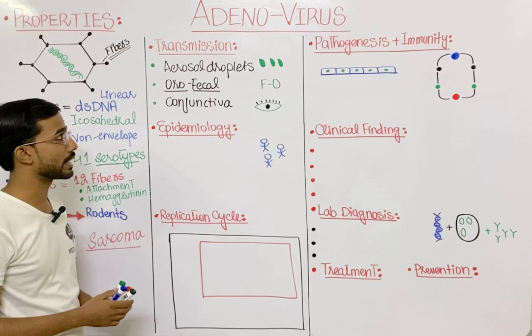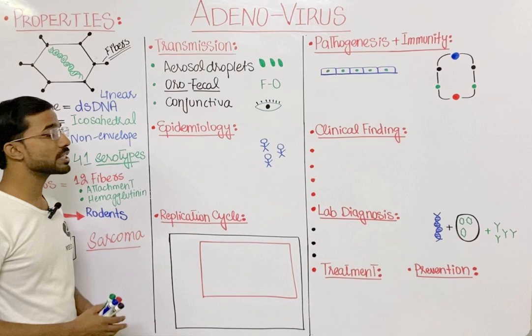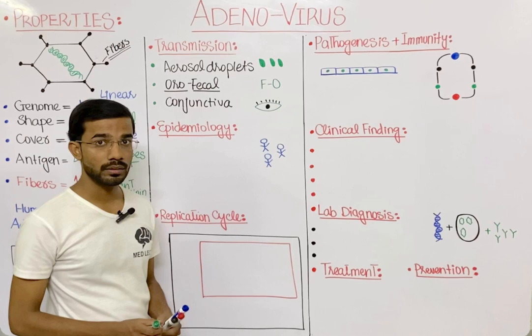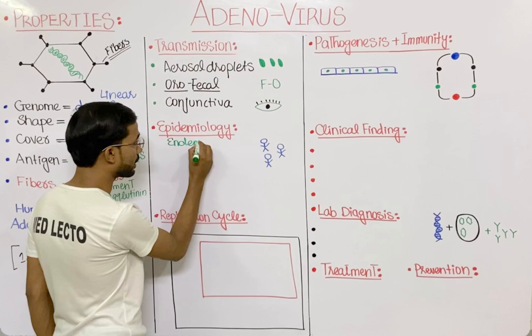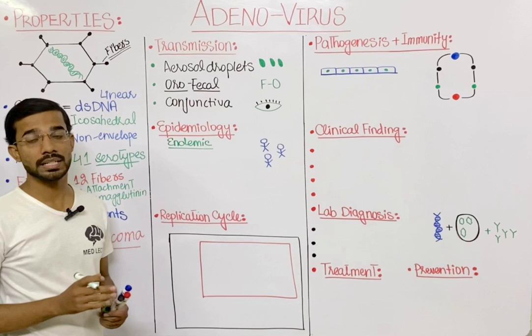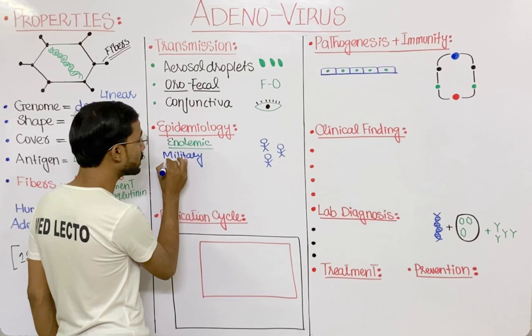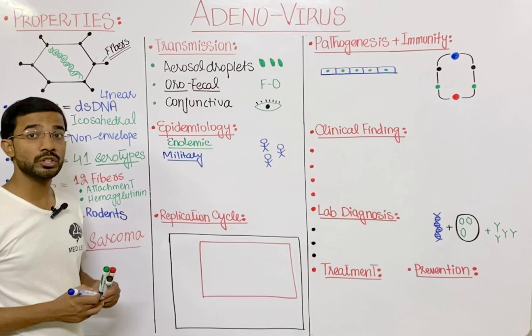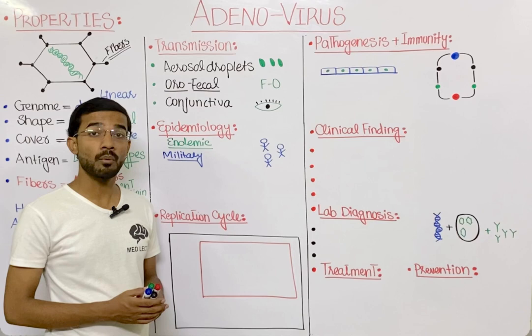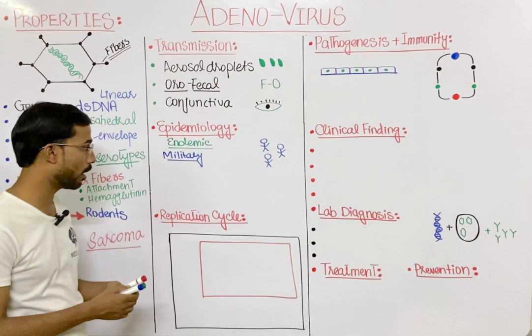Regarding epidemiology, adenovirus is endemic worldwide — endemic means constantly present in a specific area. However, outbreaks happen especially in the military, because the close living conditions of soldiers make them more susceptible to adenovirus outbreaks.